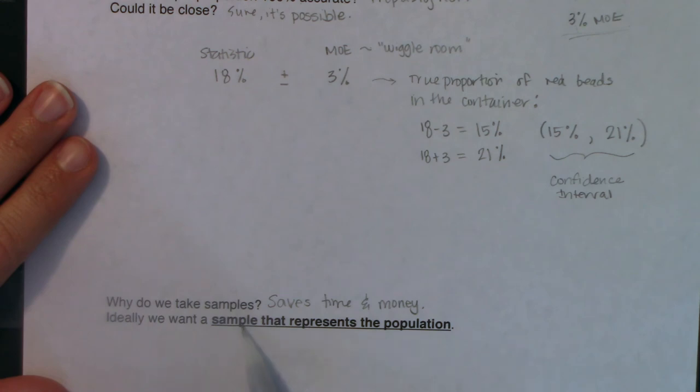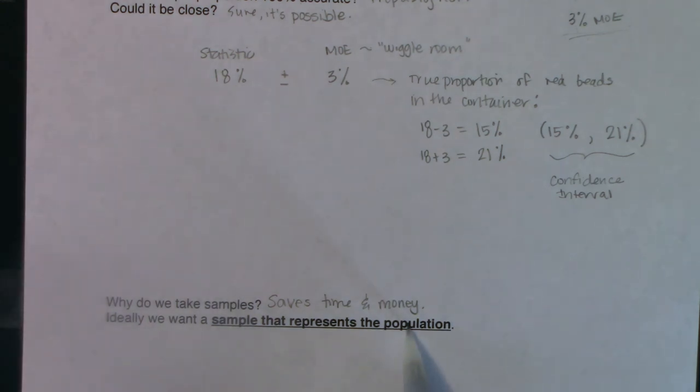And ideally we want our samples to represent our populations. We want our sample to look like our population in every aspect that we deem important, whether that be gender or age or weight or height, whatever it is. We just want it to look like our population, but on a smaller scale. And now for now I'm going to check it out.